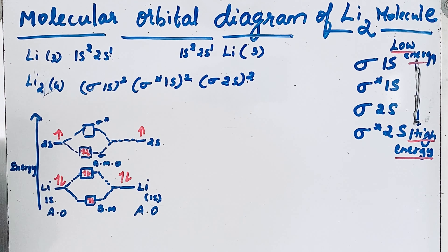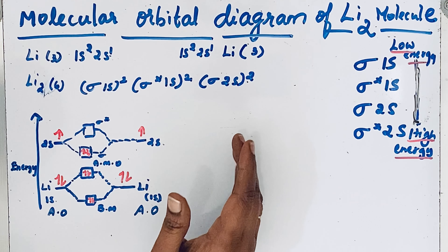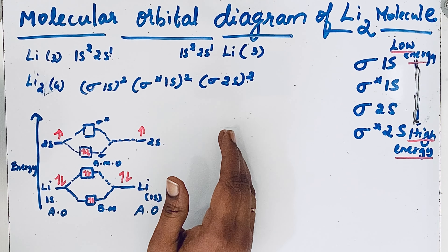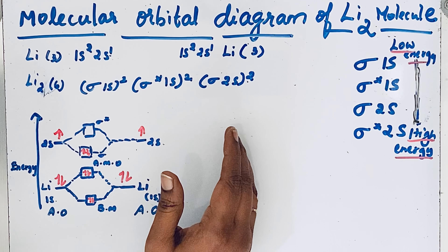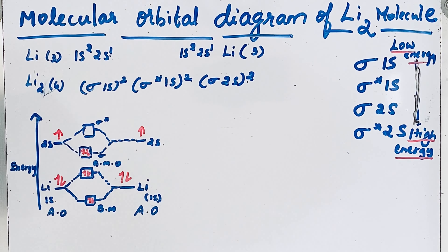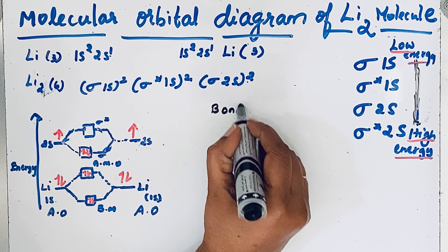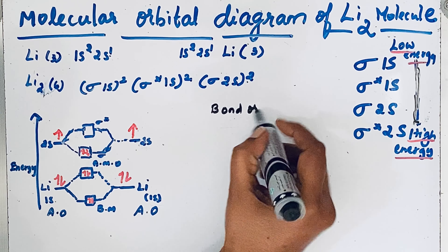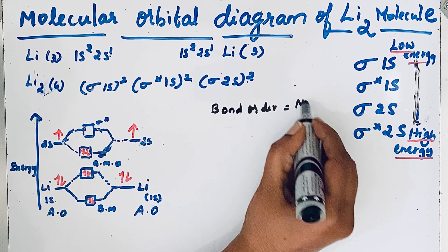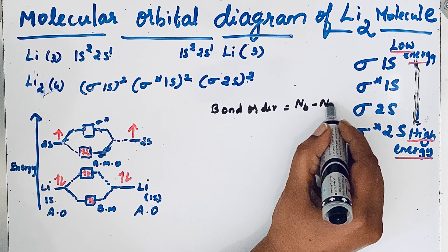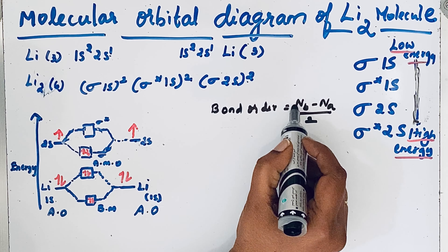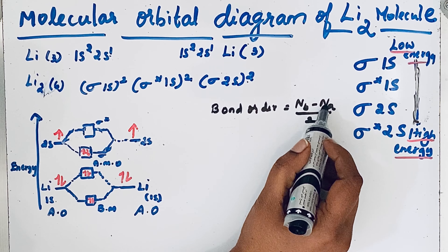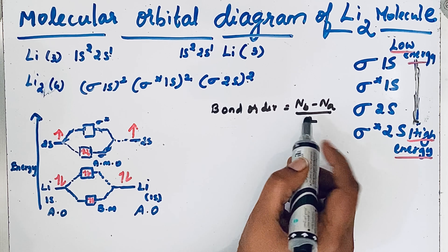Now from this we can find the bond order — whether the lithium molecule is stable or not and the number of bonds between the lithium atoms. Bond order equals Nb minus Na divided by 2, where Nb is the number of bonding electrons and Na is the number of antibonding electrons.